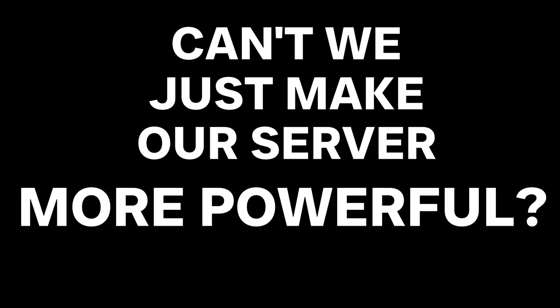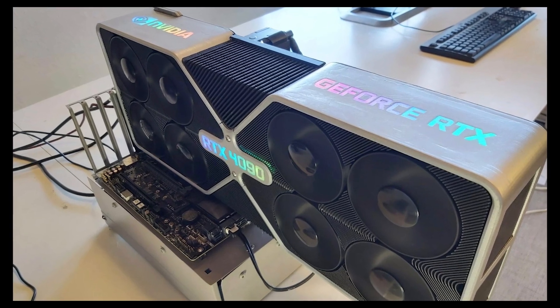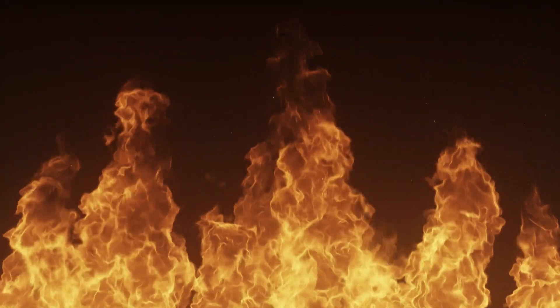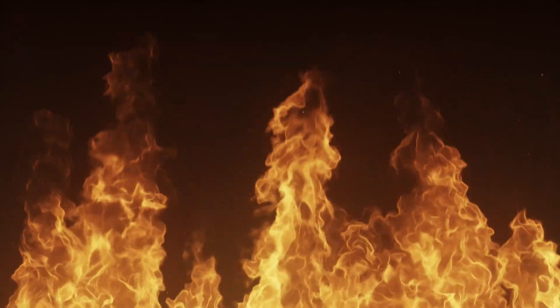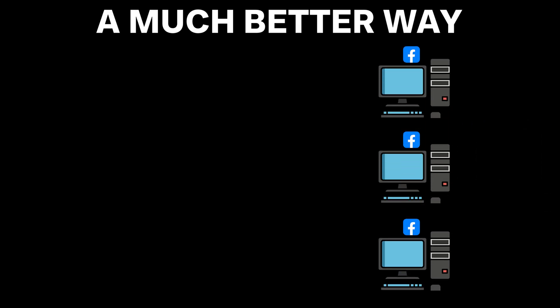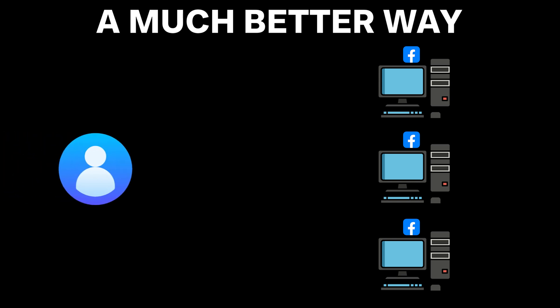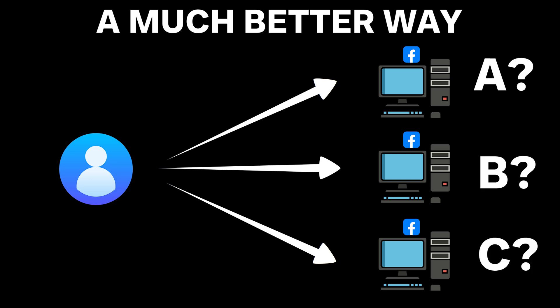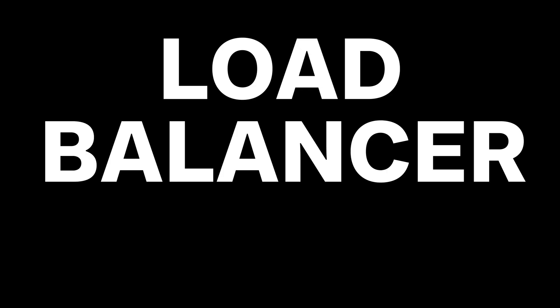Some of you might be thinking: can we just make our server more powerful so that it can handle more users? The answer is yes, and this will help. But there is a physical limit as to how much memory or CPU power you can add to a single machine. On top of that, what if the hardware in this machine suddenly fails? Would you be willing to bet your application's availability on a single server? I'm not a gambling man, but I know a bad bet when I see one. A much better way is to clone your application and run it on multiple smaller and less powerful machines. We can then point incoming traffic to one of the many available servers. But how will users know which server they should connect to? We'll need a component to direct users to an available machine when a request comes in.